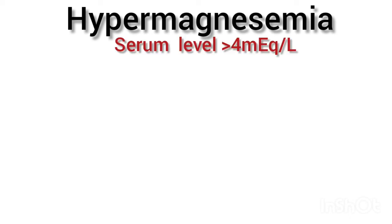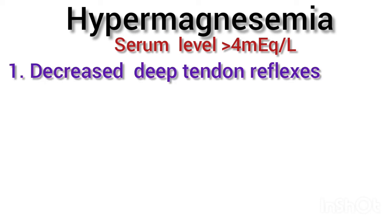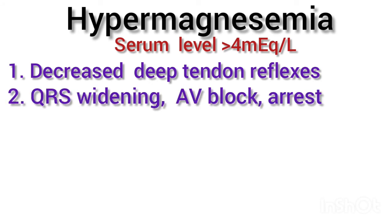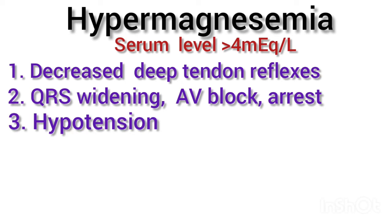Hypermagnesemia is said to occur when the serum magnesium level is above 4 milliequivalents per liter. At this level, there is decreased deep tendon reflexes, and as the magnesium level goes up, other features like QRS widening on the ECG, heart block, and even cardiac arrest can occur.